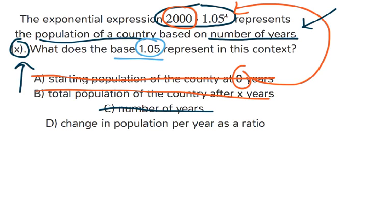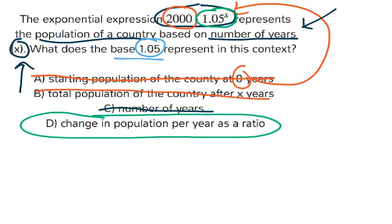D, change in population per year as a ratio. So that is the correct answer because the 1.05 is actually changing the entire population based on the number of years. It's being multiplied over and over by the exponent of x, and the population is changing based on that. So that is going to be our answer, D, change in population per year as a ratio.